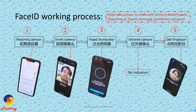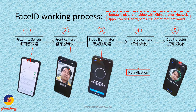So to summarize the working process of Face ID — step one: proximity sensor. Step two: front camera takes a picture of the face. Step three: flood illuminator tests whether it is a face or not. Then the infrared camera receives the signal — no indication. After that, the dot projector sends out 30,000 dots to the face to check if the face is true or false.